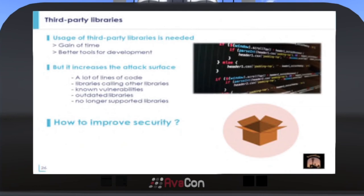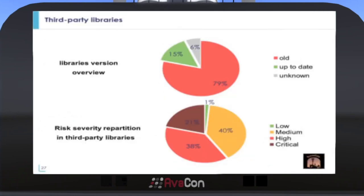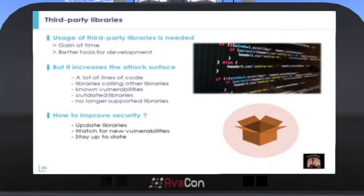Currently, 79% of the SceneGate Viewer libraries are outdated, and only 15% are up to date. The vulnerabilities found in the libraries currently used are serious enough to represent a major risk. In order to improve security, we first need to update the packages to the latest version. There will be fewer known vulnerabilities, but this issue will require constant attention. It is essential to watch for new vulnerabilities and stay up to date.